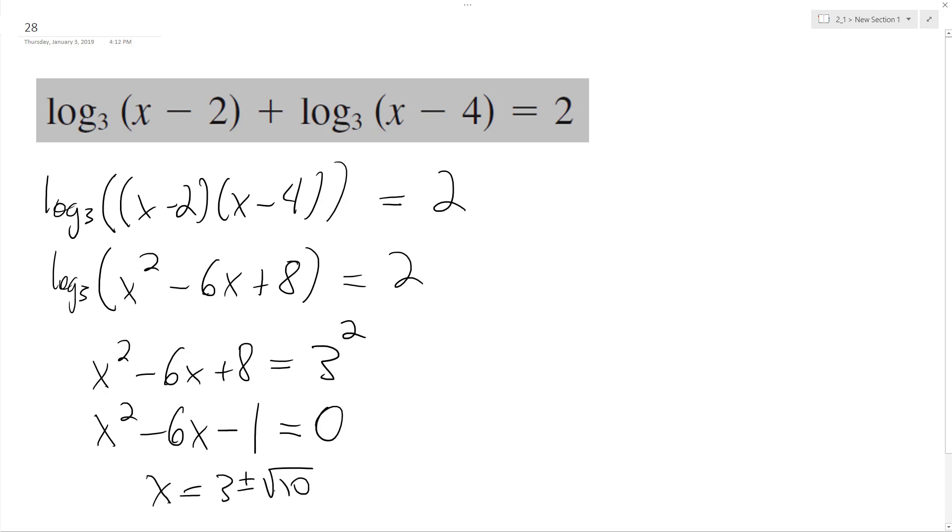But 3 minus square root of 10 is a negative value. It doesn't work, so it's an extraneous solution, so our only solution is x equals 3 plus square root of 10. And that's it.